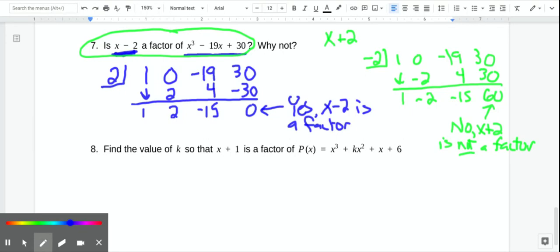So let's do synthetic division. We're going to put negative 1 in the box. And then our coefficients are 1x cubed, kx squared, 1x, and 6. And we can do synthetic division with a k. It's actually not that bad.